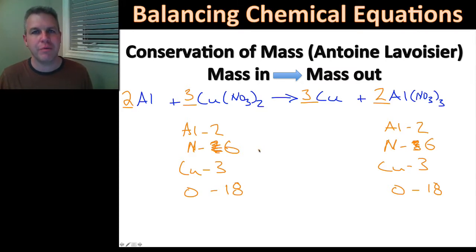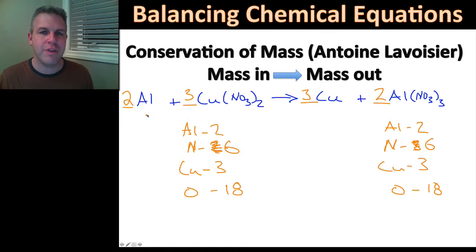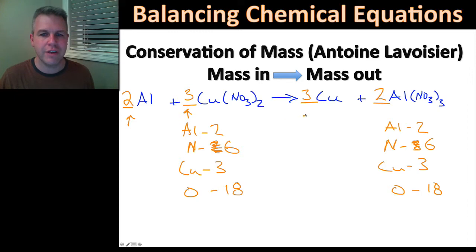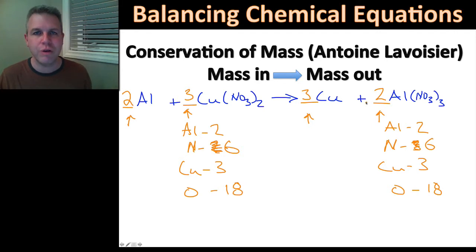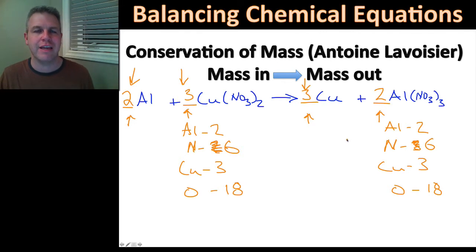That was a bit of work, but most equations play out that way. When you get to double replacements with polyatomic ions there are even more calculations, though they aren't that difficult. One important rule: if all your coefficients share a common factor, you must reduce them to the lowest common number. Also, coefficients can only ever be whole numbers — never a fraction and never a decimal, which actually makes the math easier.